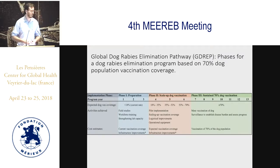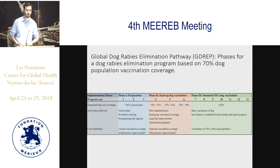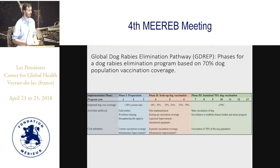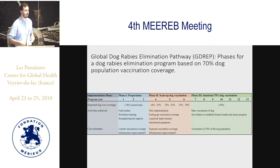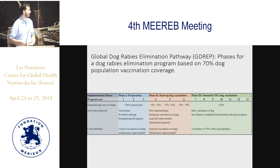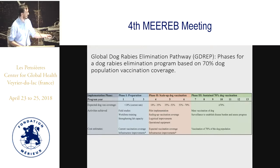This is where the GDREP tool comes in, and it's broken down into three different phases. The first phase is the preparation phase, and this is when your current vaccination status in the country is about 18% or lower. This is really the introductory phase when you're beginning to implement mass dog vaccination in your country, looking at training your workforce, undertaking field studies to understand your dog population, and strengthening your laboratory capacity. We've heard from various speakers about the importance of lab capacity to diagnose samples and to strategically vaccinate in those areas. That's a three-year phase.